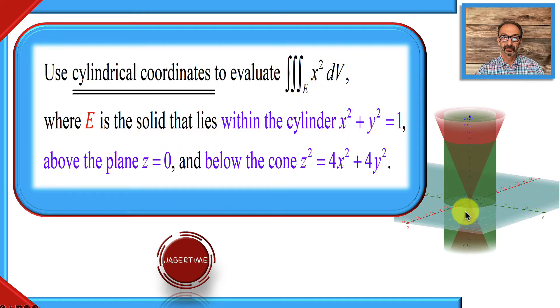Where E is the solid that lies within the cylinder x squared plus y squared equals 1. Since we are in 3D and z is not mentioned, it's going to go as a cylinder up and down - that's the green cylinder. This is the positive x-axis, the positive y-axis, and the positive z-axis.